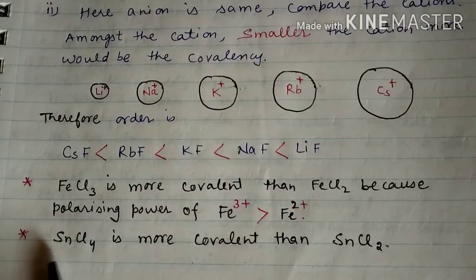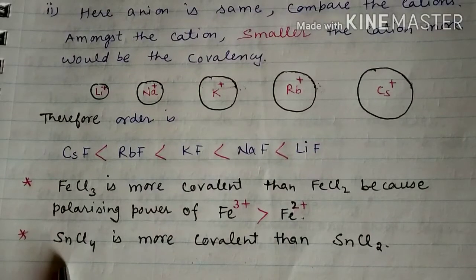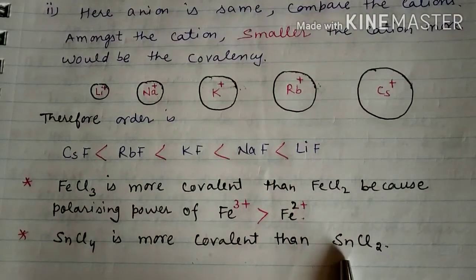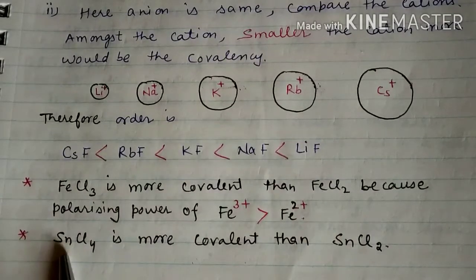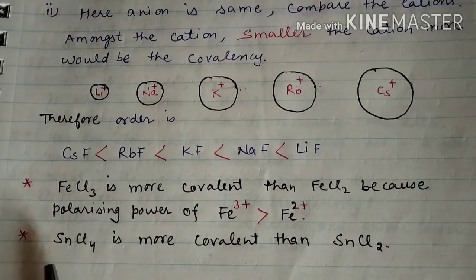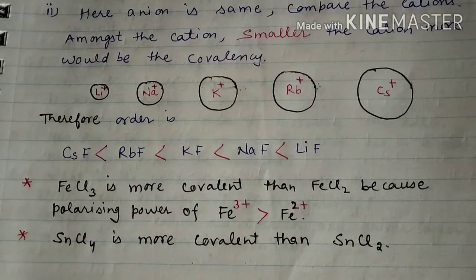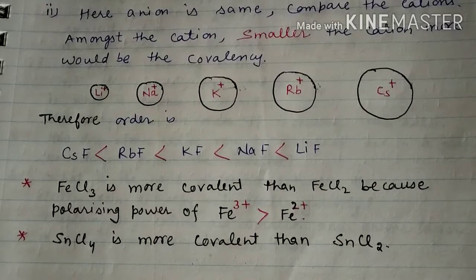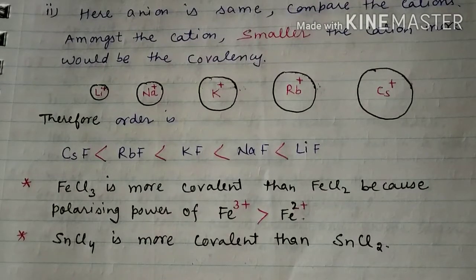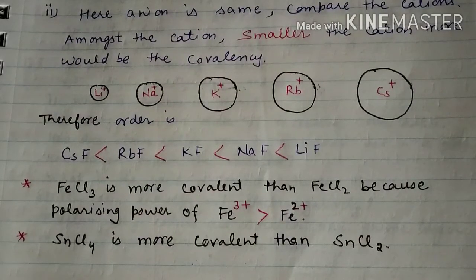Similarly, SnCl4 is more covalent than SnCl2 because Sn in SnCl4 carries a +4 charge while in SnCl2 it carries a +2 charge. Greater the charge on the cation, greater will be the covalency. In this video we have discussed Fajan's Rule and how it is important in deciding ionic or covalent character. I hope you found this video useful. Thank you so much for watching, have a great day.